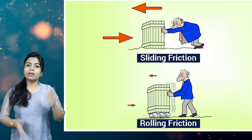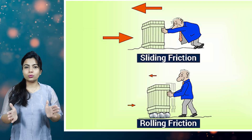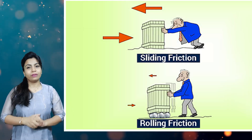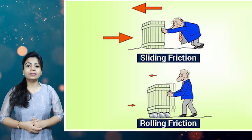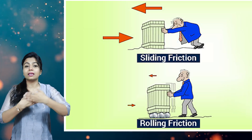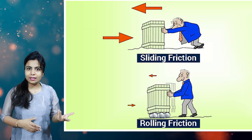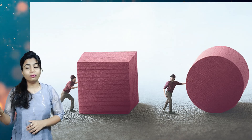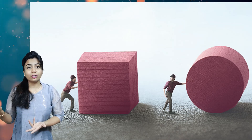Now I would like to tell you about rolling friction versus sliding friction. When we compare these two, sliding friction is more than rolling friction. As I explained, friction is developed when two surfaces rub against each other. In sliding friction, more surface is in contact with the ground as compared to a ball or wheel, which develops rolling friction.